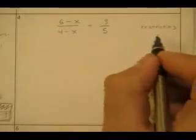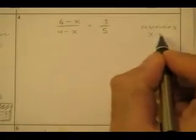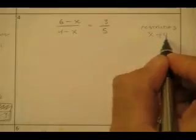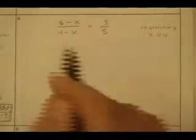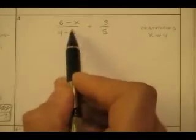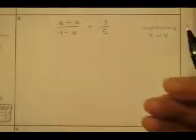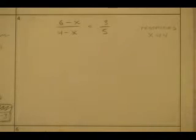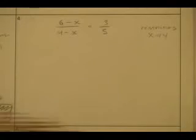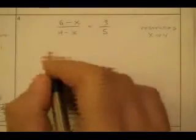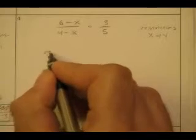Restrictions: x cannot equal 4. Why? If x was 4, the denominator would be zero, and that's nonsense. I'm going to solve this. Instead of multiplying by the LCD, I'm just going to cross-multiply here — it looks easier.